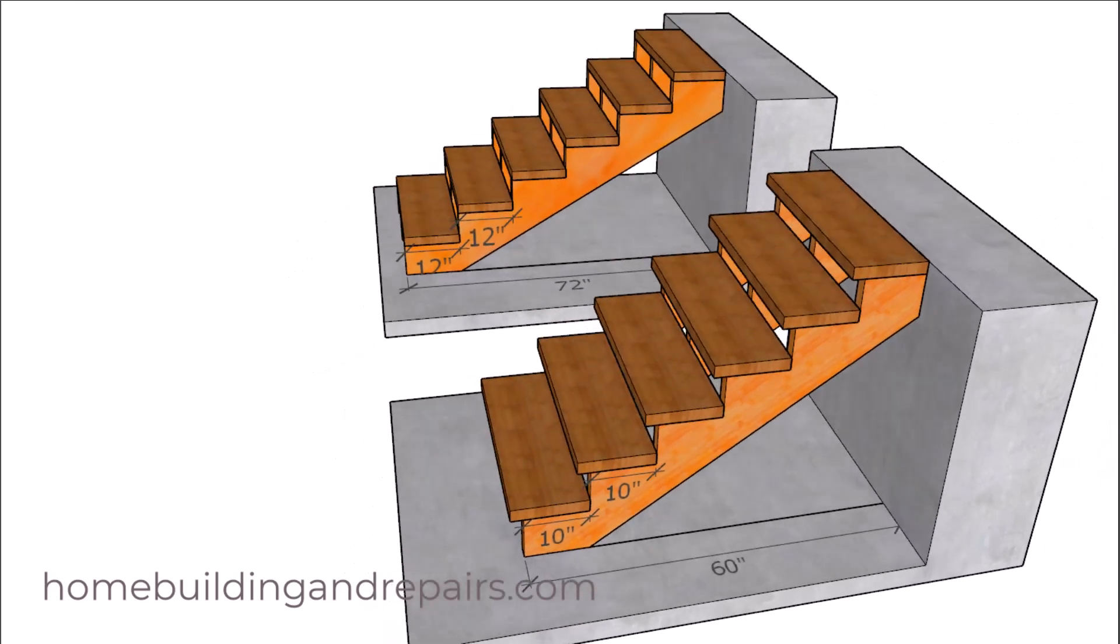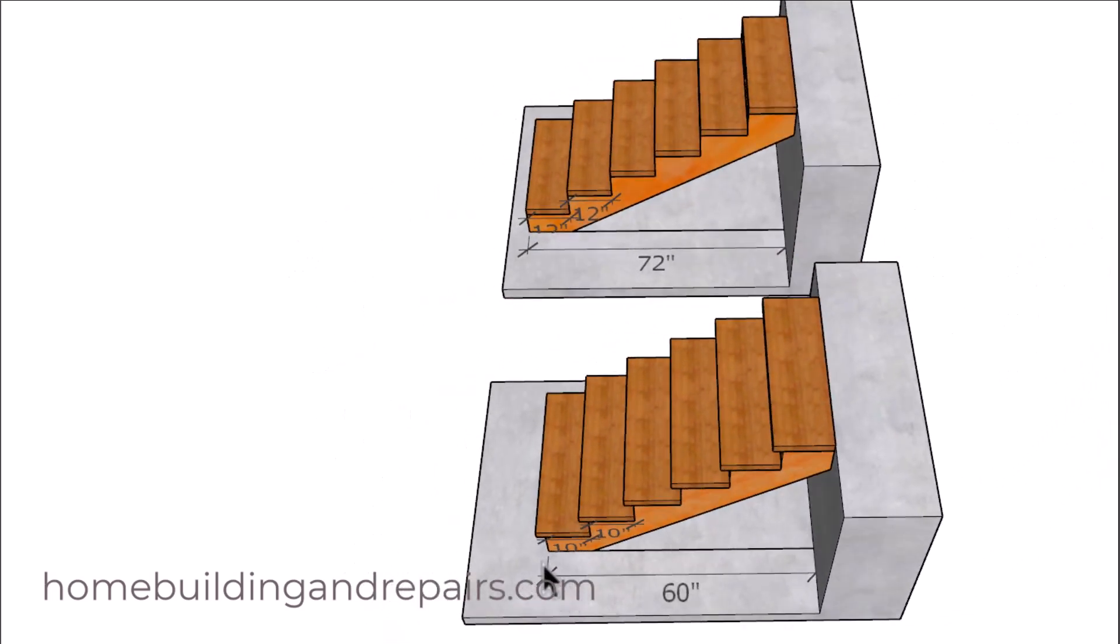for most residential stairs, they have a 10 inch minimum depth. And to calculate the depth of the individual treads, all you need to do is measure the stairway and divide it up into the amount of steps that you have.